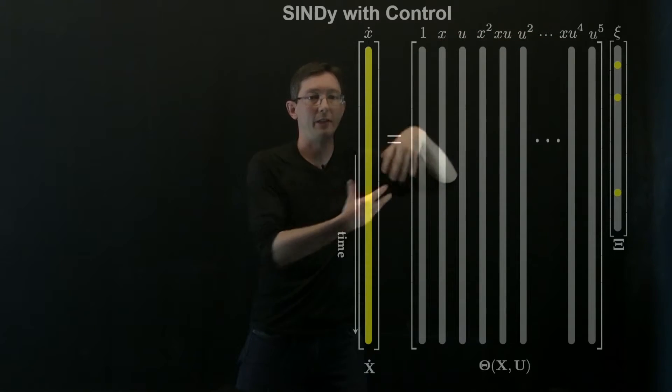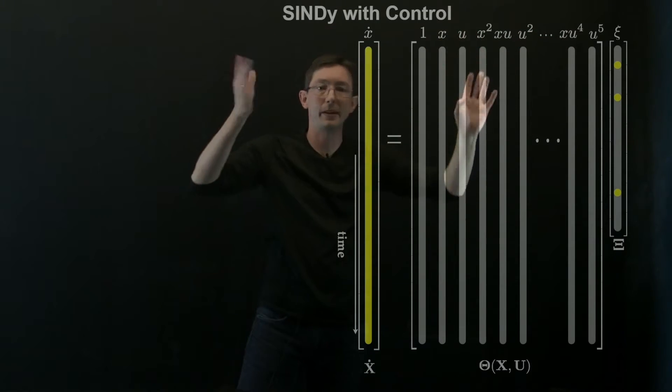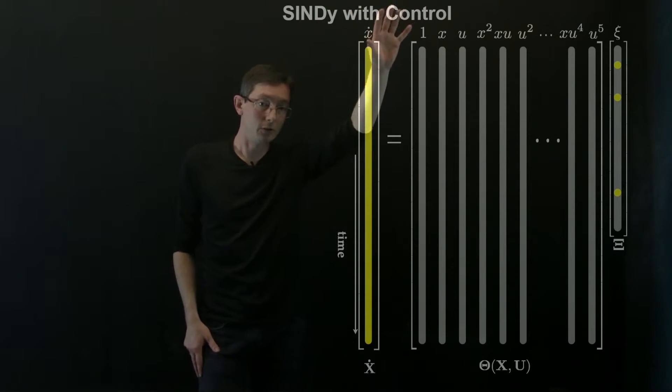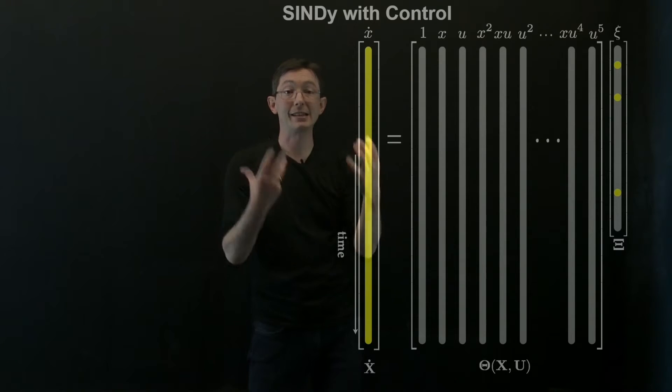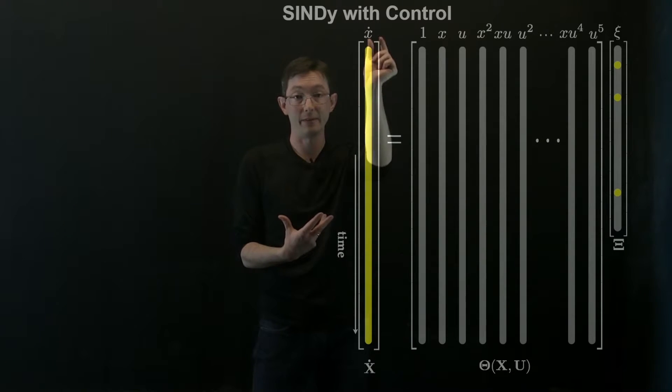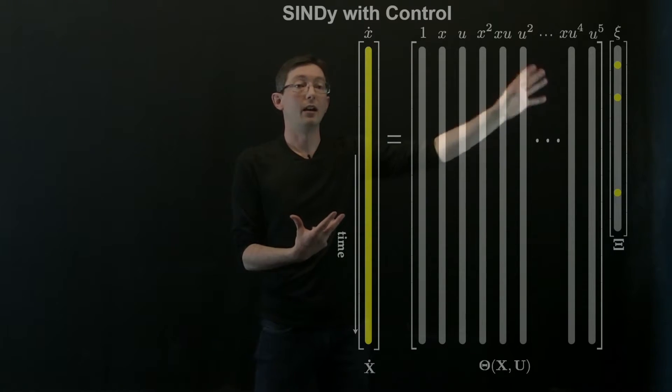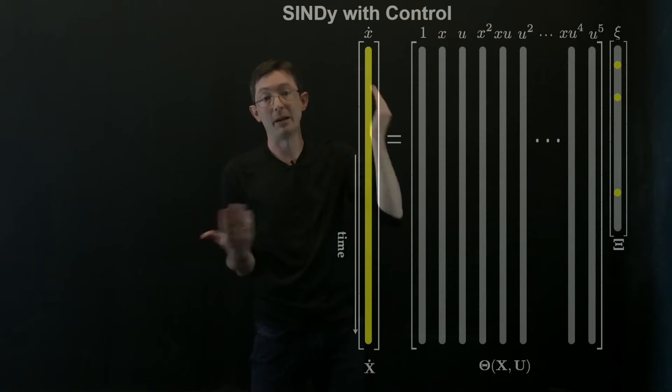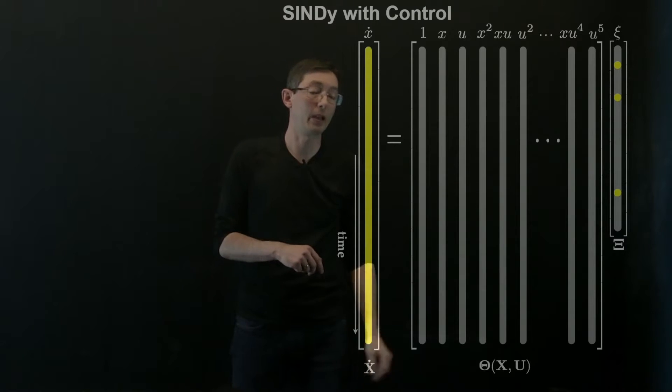This library is only limited by your imagination. This can include polynomials, it can have cosines and sines, tangents, Bessel functions, whatever you want. But the idea with SINDy with control is we're going to apply that same sparse regression procedure to find the best fit x dot, the fewest columns of this matrix that agree with the time derivative of my measurement vector x.